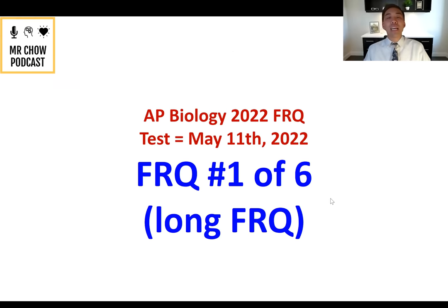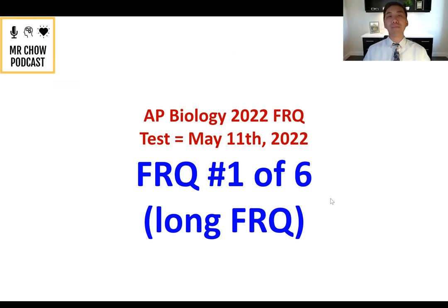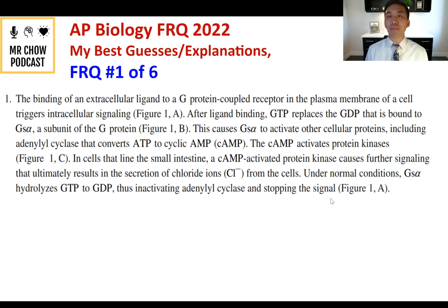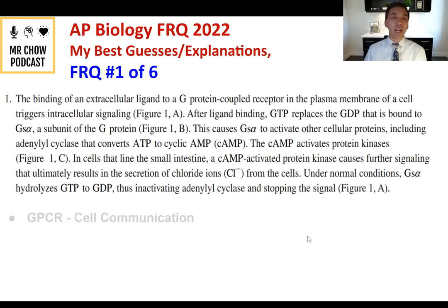2022 AP Biology FRQs. The first two FRQs are longer ones with multiple parts. FRQ number one: the binding of an extracellular ligand to a G-protein coupled receptor in the plasma membrane of a cell triggers intracellular signaling. I'm already thinking this has to do with the GPCR and the cell communication unit we covered in class.